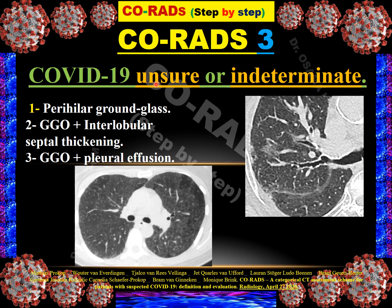CO-RADS 3 means unsure or indeterminate for COVID-19 diagnosis. If ground glass opacity is present but not based on the pleural surface — for example in perihilar distributions — we consider it CO-RADS 3.